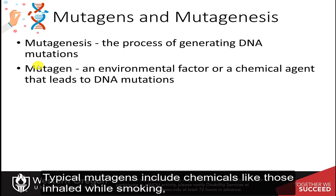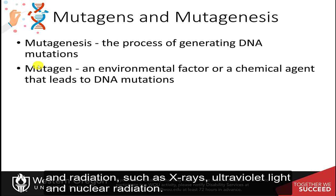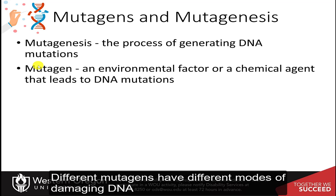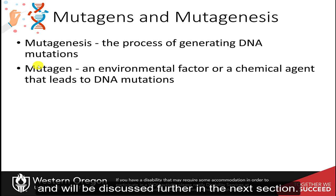Typical mutagens include chemicals, like those inhaled while smoking, and radiation, such as x-rays, ultraviolet light, and nuclear radiation. Different mutagens have different modes of damaging DNA and will be discussed further in the next section.